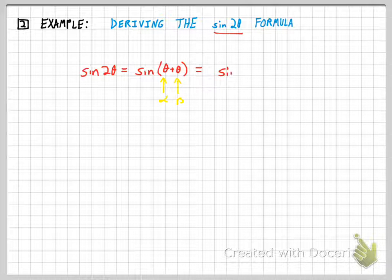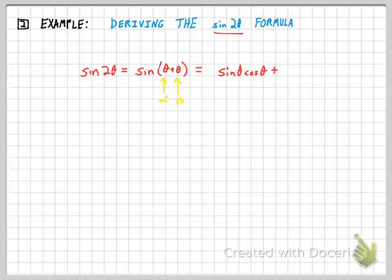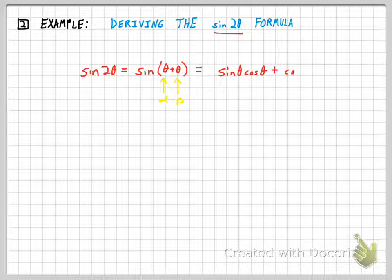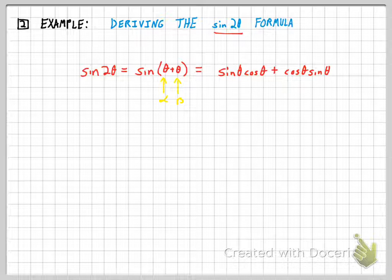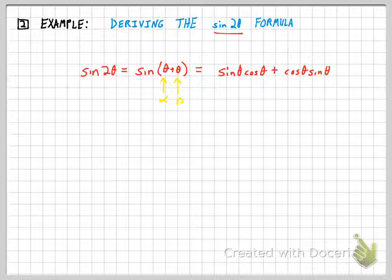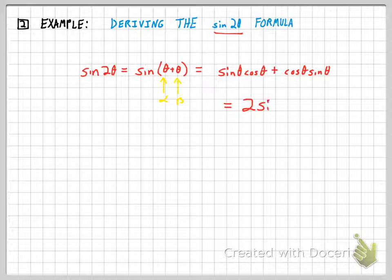So I have sine of the first angle, which is θ, times the cosine of the second angle, which is θ, plus the cosine of the first angle, which is θ, times the sine of the second angle, which is θ. So while I'm thinking of the first angle and the second angle as two different angles, they're actually all the θ angle. And you can see that this leads to two like terms, which are sine θ and cosine θ. And so that is the first of our three formulas.